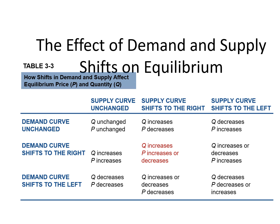As a summary example: when the demand curve remains unchanged and the supply curve shifts to the right — drawing supply, demand, price, and quantity — only the supply changes, not the demand. The new equilibrium is the red point and the old one was the original. What happened to prices? They decreased, and the quantity increased. You do not need to memorize this; always show it graphically.